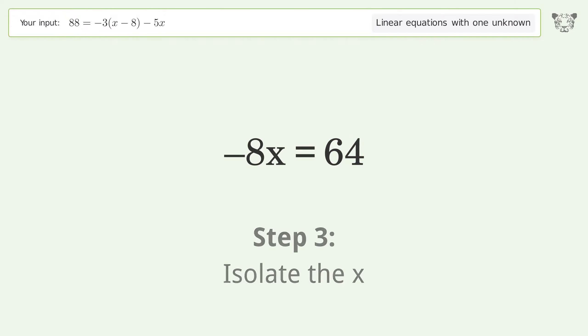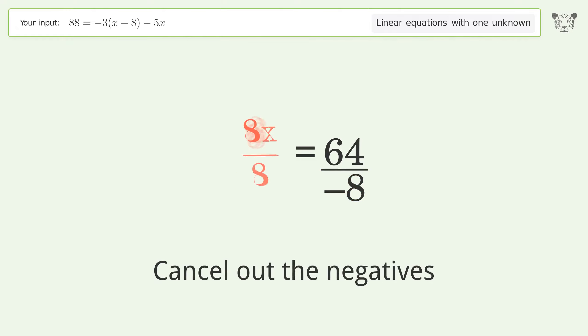Isolate the x. Divide both sides by negative 8. Cancel out the negatives. Simplify the fraction.